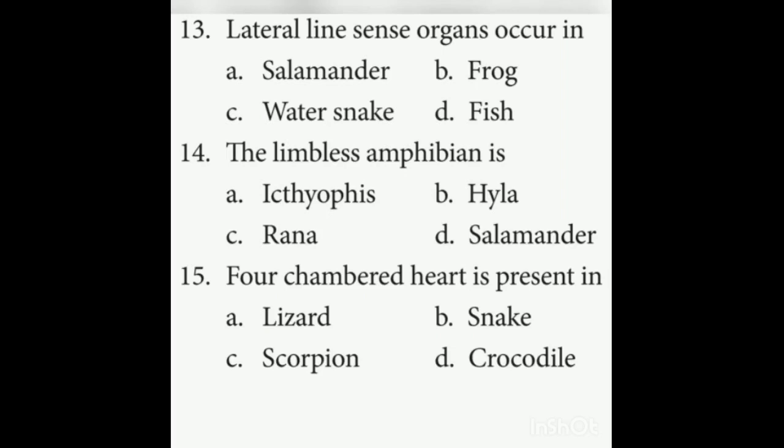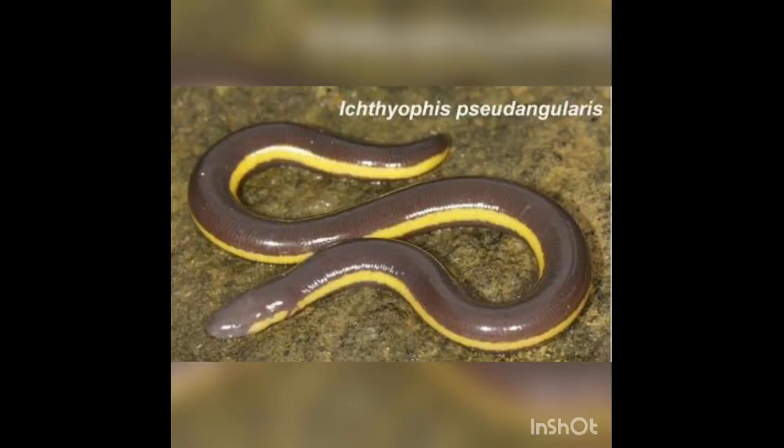Fourteenth question: The limbless amphibian is which organism? Amphibians live both on land and in water — examples are Hyla, Rana (frog), and Salamander. The limbless amphibian is Ichthyophis — it does not have any limbs.